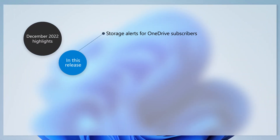Here are a few of the changes we've made based on your feedback. Microsoft OneDrive subscribers will now see storage alerts on the Systems page in the Settings app. The alerts appear when you are close to your storage limit.